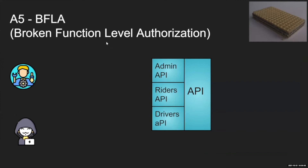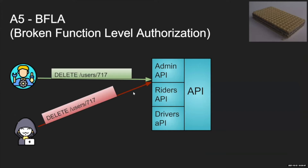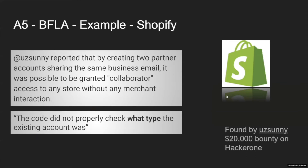In a high-level overview, Broken Function Level Authorization is a vulnerability that allows a regular user to access an admin endpoint because developers don't check the user's role or group before granting access to admin functions. It was found in Shopify where a researcher managed to assign himself as a collaborator on a different shop just because the developers didn't verify he wasn't an admin.